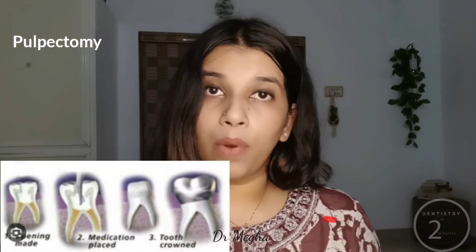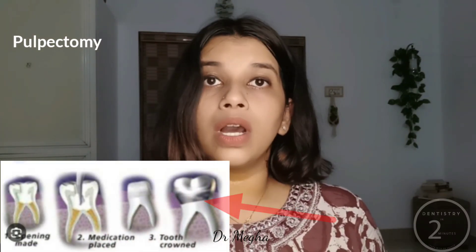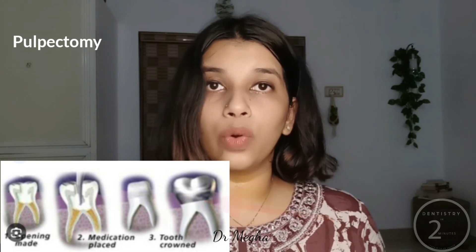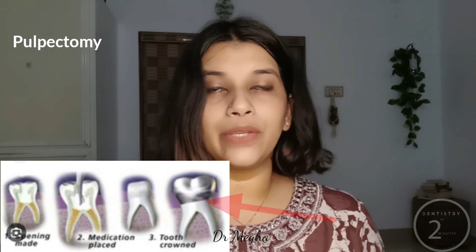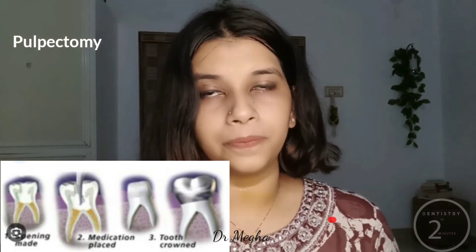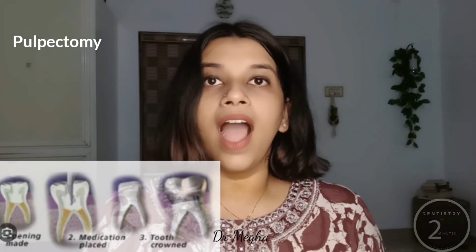After the pulpectomy is completed, it is very important to provide a hermetic seal of the coronal portion by using a stainless steel crown. I hope the basic concept of pulpectomy is clear for everyone. I will be back with another video.